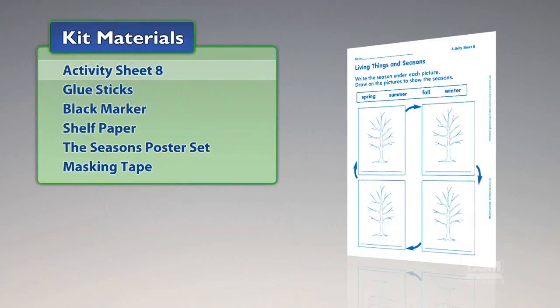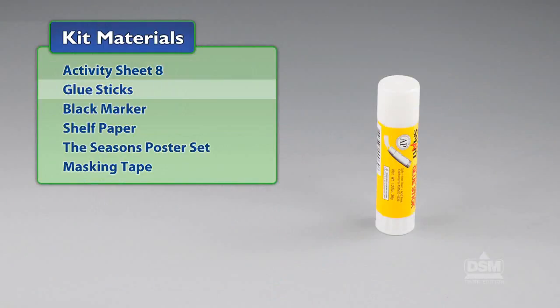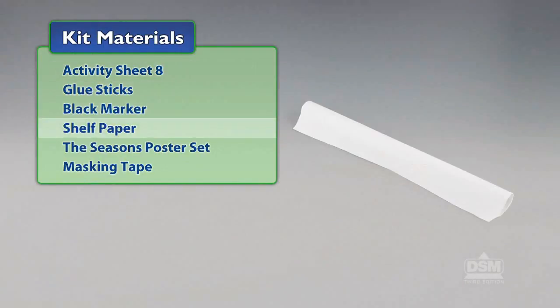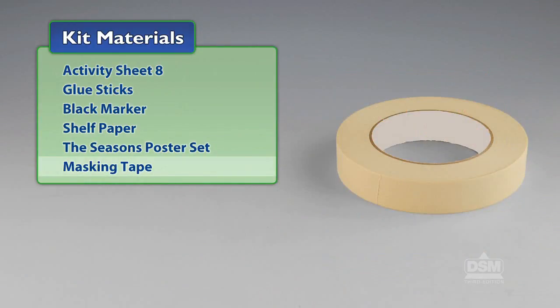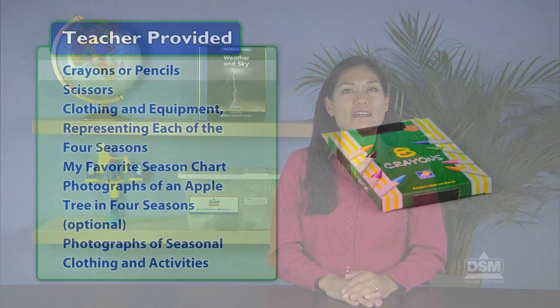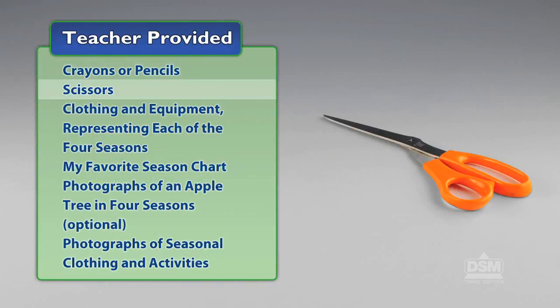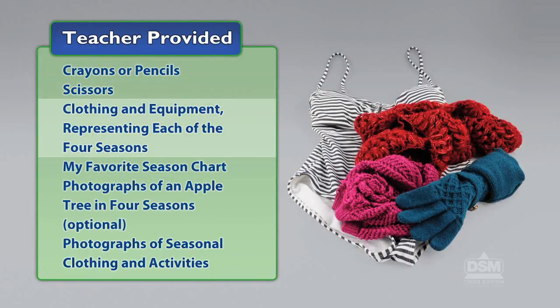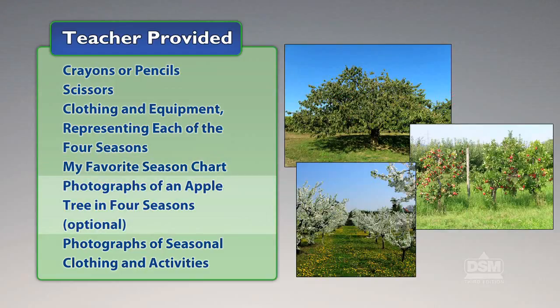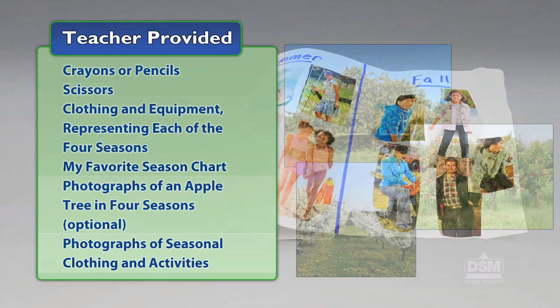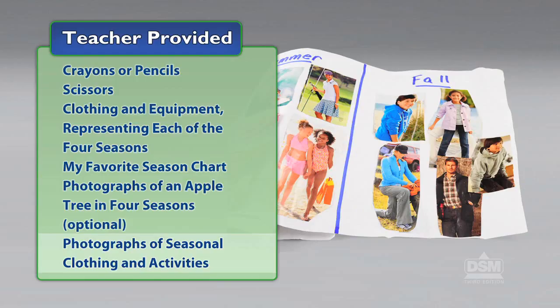You will need the following materials from the kit: Activity Sheet 8, glue sticks, black marker, shelf paper, the seasons poster set, and masking tape. You will also need to provide crayons or pencils, scissors, clothing and equipment representing each of the four seasons, the my favorite season chart from Activity 7, photographs of an apple tree in four seasons, and photographs of seasonal clothing and activities.